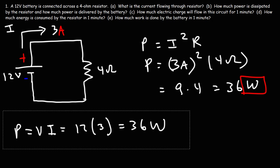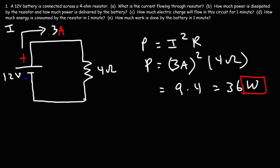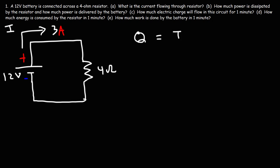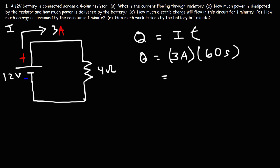Part C: How much electric charge flows in the circuit for one minute? Using Q = IT: current is 3 amps, time is 60 seconds. So Q = 3 × 60 = 180 coulombs of charge transferred in one minute.